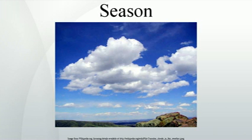For approximately half of the year, from around March 20 to around September 22, the Northern Hemisphere tips towards the Sun, with the maximum amount occurring on about June 21. For the other half of the year, the same happens in the Southern Hemisphere instead of the Northern, with the maximum around December 21.